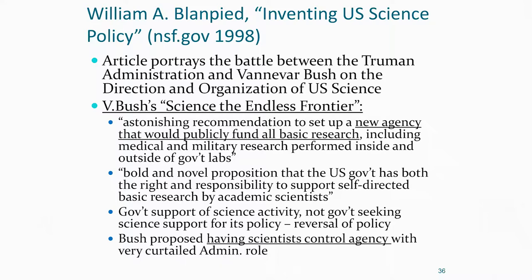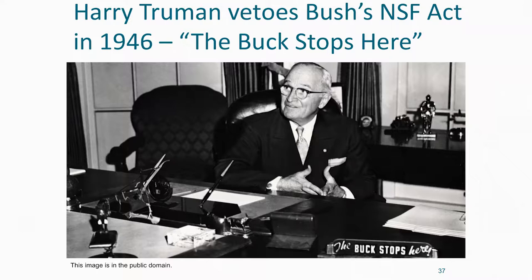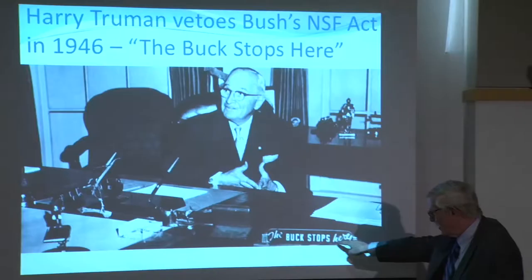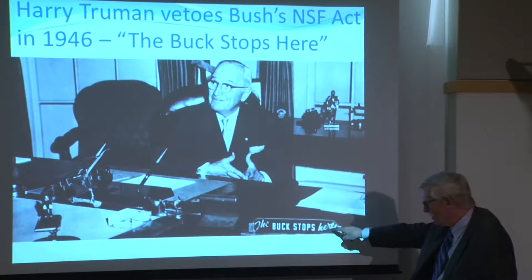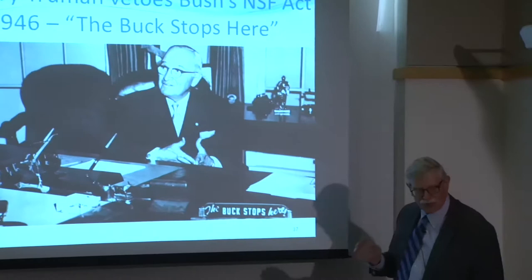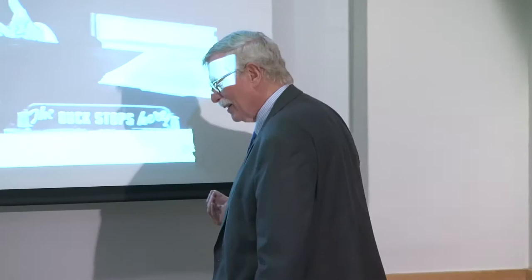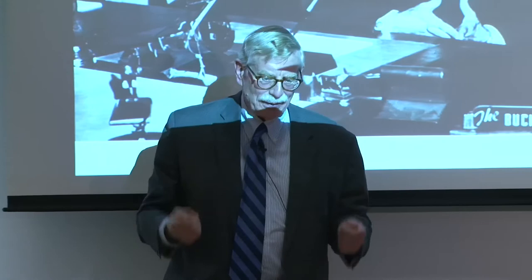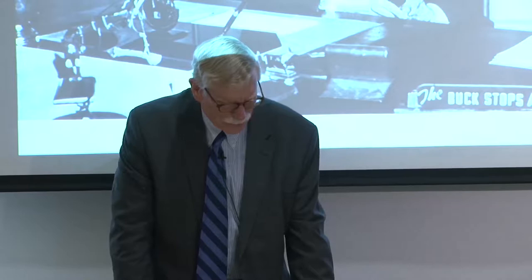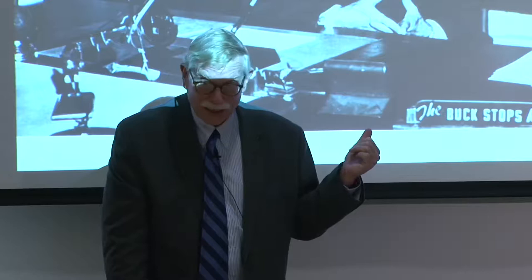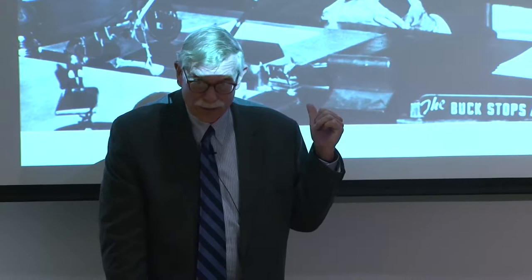Something happens. He writes up legislation to create this one tent for all US science — what became known as NSF. And it runs into Harry Truman. Truman reads the bill and realizes that the buck is not stopping on Harry Truman's desk for science — it's stopping on Vannevar Bush and a bunch of scientific elite types who would control science out of the political control of the president.